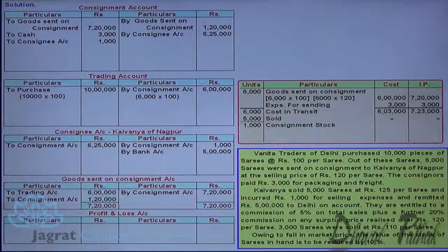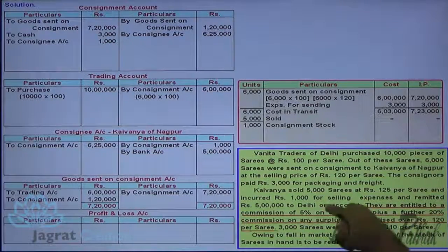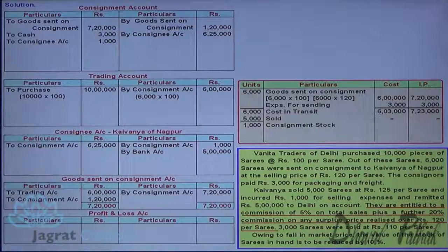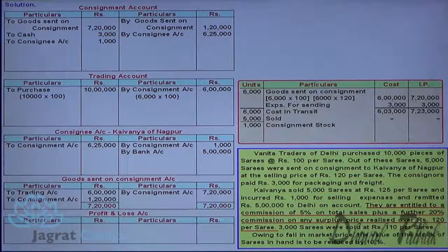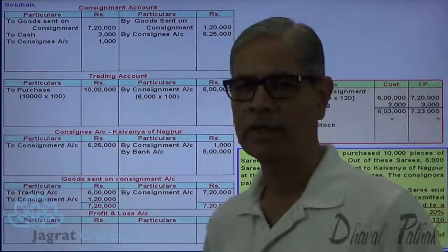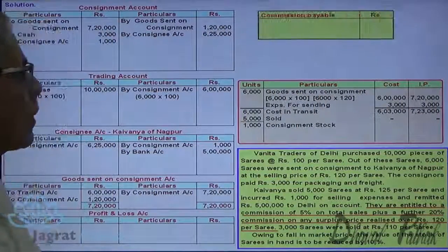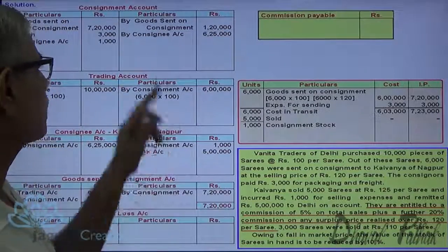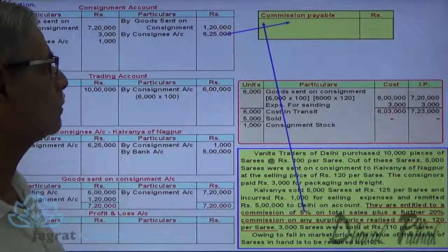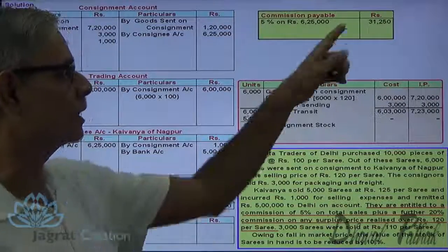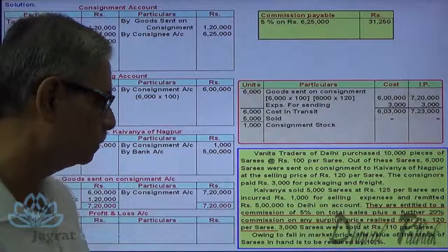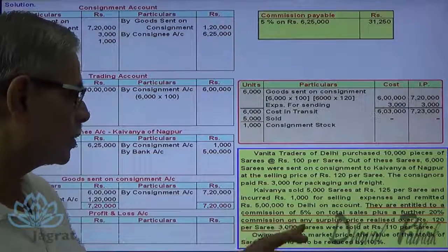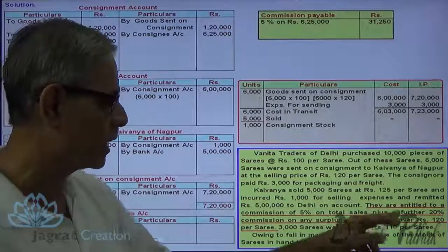This is the consignment stock. They are entitled to a commission of 5% on total sales plus a further 20% commission on any surplus price realized over ₹120. Commission is to be calculated as follows: 5% on total sales of ₹6,25,000 equals ₹31,250 as commission at the rate of 5%. For the 20% commission on the surplus price realized over ₹120.